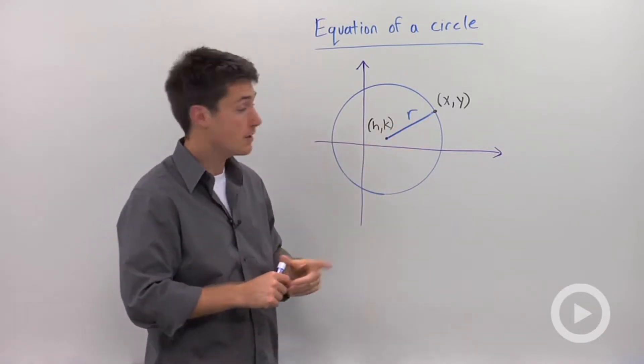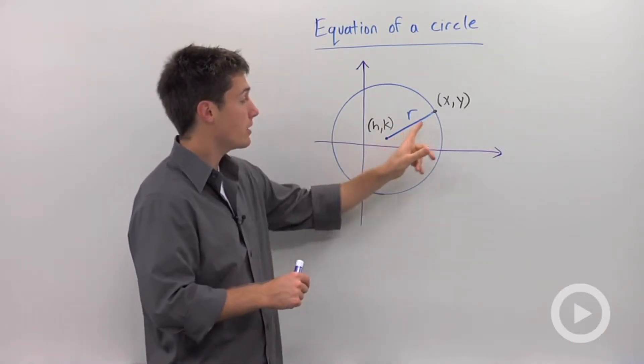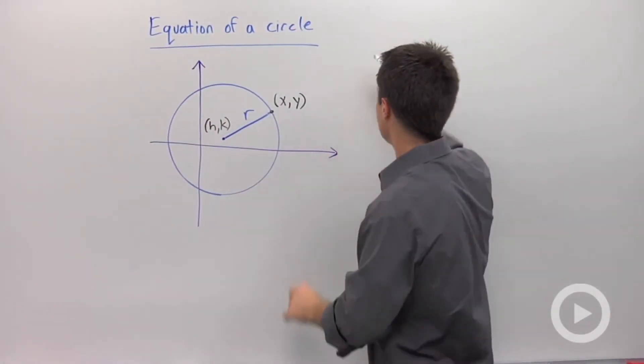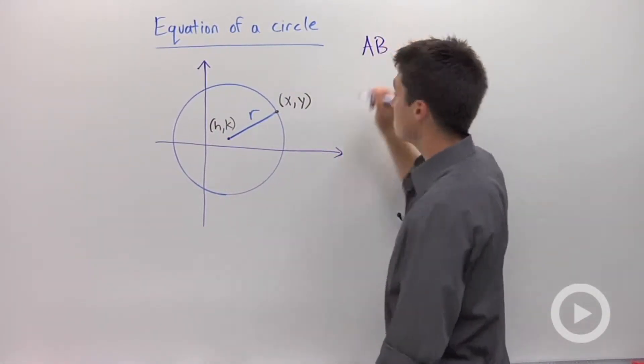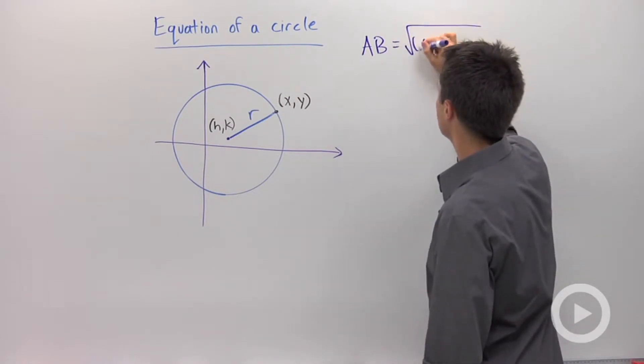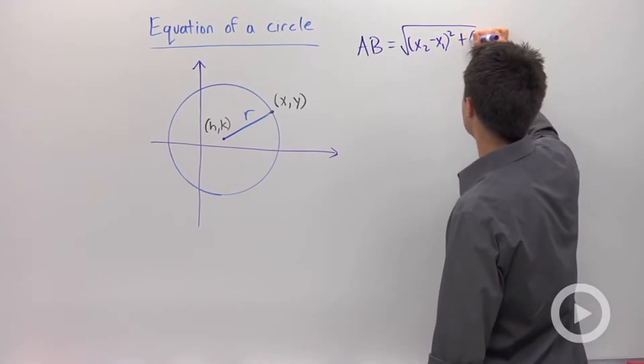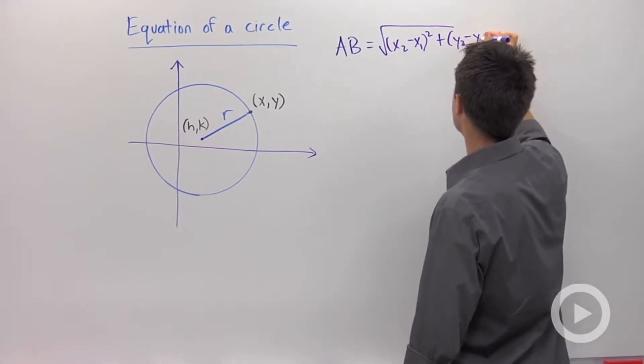How can I calculate the distance of r from point h, k to x, y? Well we said that our distance formula between any two points, a and b, is equal to the square root of the differences of the x's, squared, plus the differences of the y's, squared.